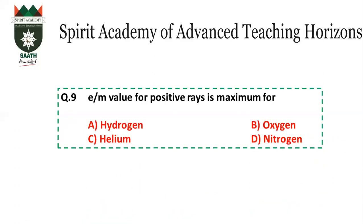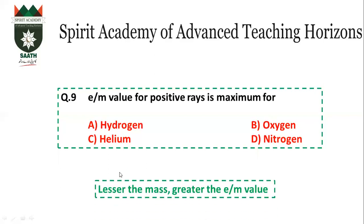Question number 9: E over M value is maximum for which particle? Charge is in the numerator and mass is in the denominator. This means the lesser the mass, the greater the charge-to-mass value. The smallest mass in the periodic table belongs to hydrogen, so hydrogen will have the greatest charge-to-mass value. The answer is A (hydrogen/proton).